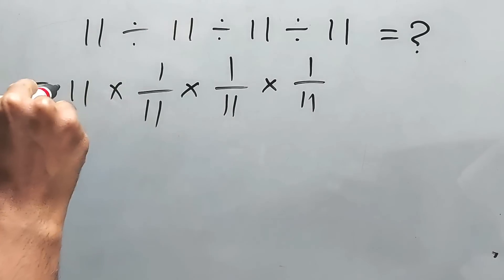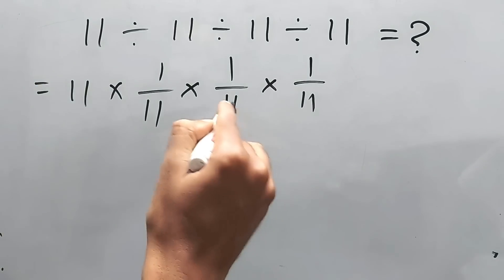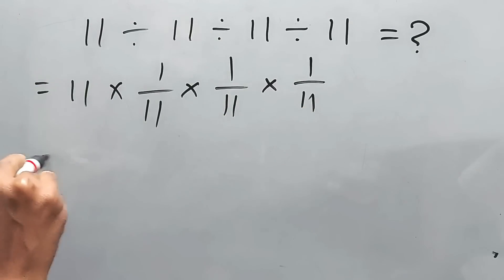So this 11 and this 11, when these two will be cancelled automatically, so 11 into 11 is 121. The answer will be 1 by 121. It's that easy.